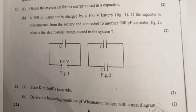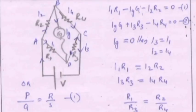Part B: Derive the balancing condition of Wheatstone bridge with a neat diagram. I₁R₁ minus IgG minus I₂R₂ equals zero. IgG plus I₃R₃ minus I₄R₄ equals zero. Ig equals zero then I₃ equals I₁, I₂ equals I₄. I₁R₁ equals I₂R₂. I₃R₃ equals I₄R₄. R₁ by R₃ equals R₂ by R₄.